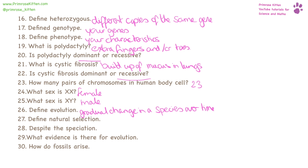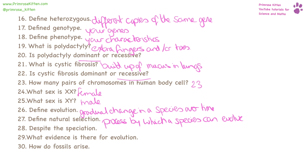Evolution is where species gradually change over time, and natural selection is the process by which species evolve. Speciation is the development of a new species. Evidence for evolution comes from the fossil record. Fossils come from bones — the hard bits of the body — as the soft bits of the body decay away.